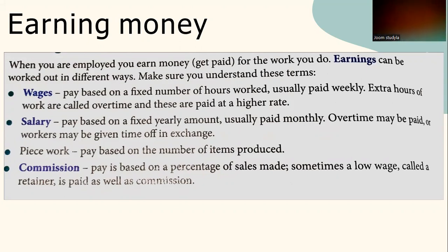You will use your calculator to find answers quickly and efficiently. When you are employed, you earn money — you get paid for work you do. Earnings can be worked out in different ways. Wages: pay based on a fixed number of hours worked, usually paid weekly; extra hours are called overtime and are paid at a higher rate. Salary: pay based on a fixed yearly amount, usually paid monthly. Piece work: pay based on the number of items produced. Commission: pay based on a percentage of sales made — sometimes a low wage called a retainer is paid as well as commission.